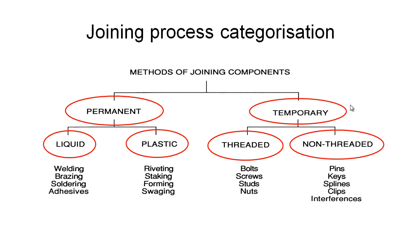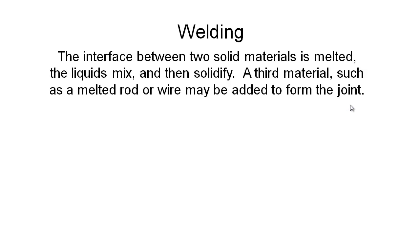We're going to start by looking at a variety of different welding processes. In general terms, to create a weld, the interface between two solid materials is melted; the liquids from these two materials are mixed together and then allowed to solidify. Sometimes we can also use a third material such as a melted rod or wire added to the weld pool to increase the amount of material and help form a stronger joint — this is an optional step.